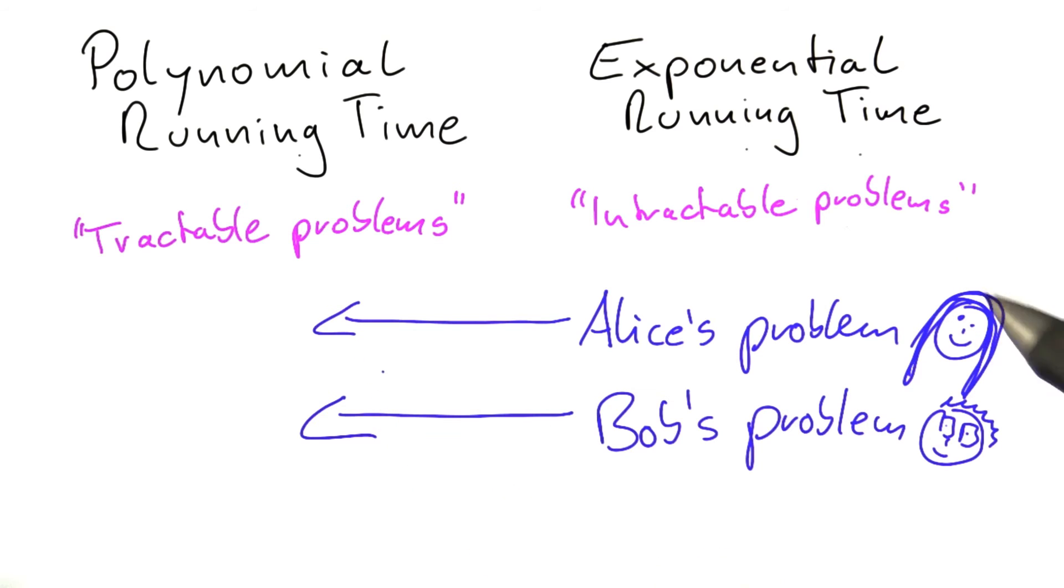So far, Alice and Bob don't have a good idea on how to tackle that problem. That's why they decide to get together and discuss with each other the problems they are trying to solve.